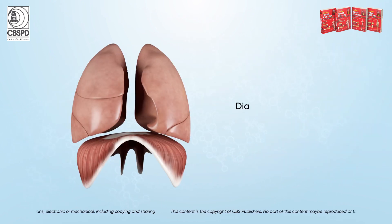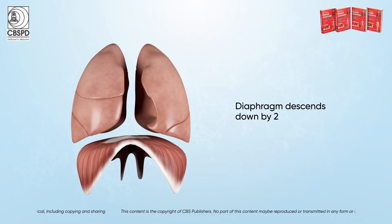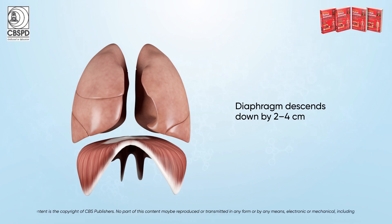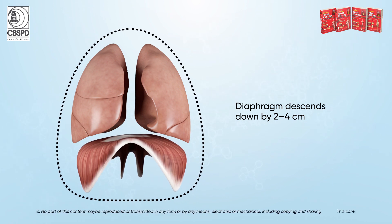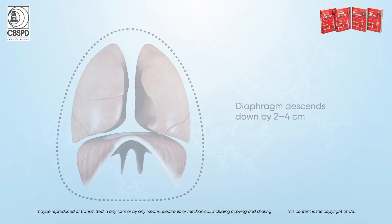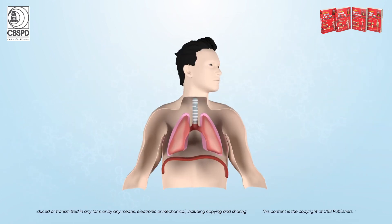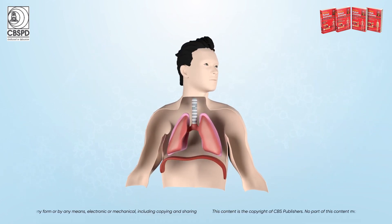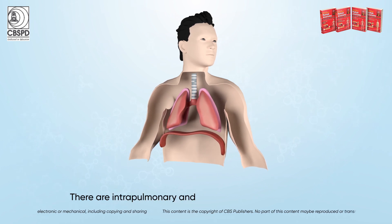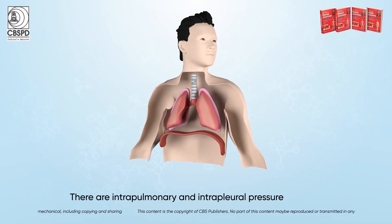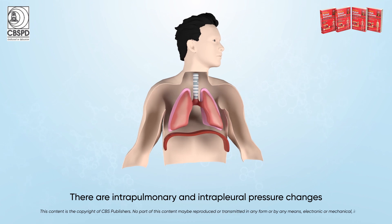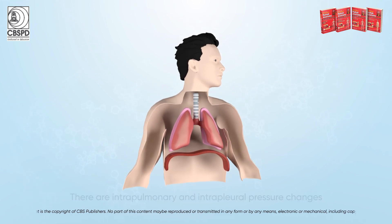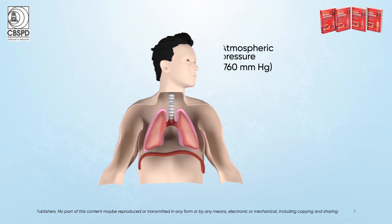The diaphragm descends by two to four centimeters like a piston of a cycle pump, increasing the vertical diameter of the thoracic cage. With the increase in these three diameters, there are intrapulmonary and intrapleural pressure changes, while atmospheric pressure remains the same.